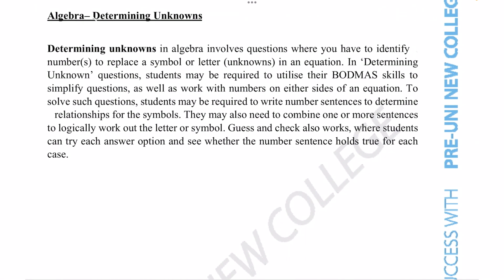Determining unknown questions in algebra involves questions where you have to identify numbers or a certain number to replace a symbol or letter — which we call the unknowns — in an equation. We might need to use our BODMAS skills to simplify questions and work with numbers on either side of an equation. We might need to write number sentences to determine the relationship for the symbols, or combine one or more sentences together. Guess and check is also a potential strategy where we try each answer option to see whether the number sentence holds true.